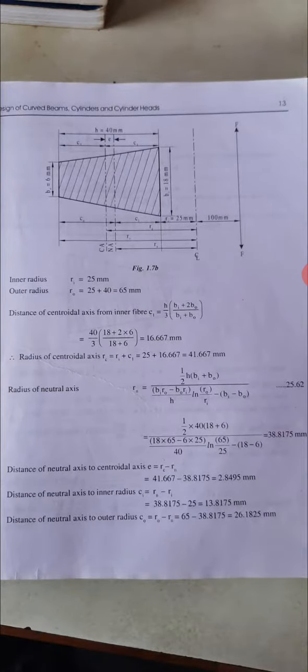The outer side is called BO = 6mm, inner side width is called BI = 18mm, and height H = 40mm. The corresponding RI, RO, RC, RN are shown, with CI and CO shown in the figure.